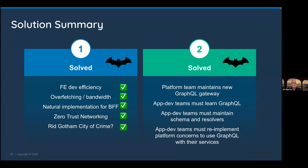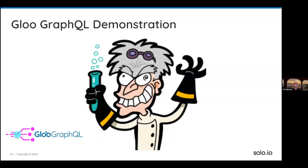In addition to resolving the initial concerns from the first part of this talk, we've now addressed new issues as well. Our platform team no longer has to maintain a separate GraphQL gateway. Our app dev teams don't necessarily have to learn GraphQL to the same extent, and they don't even have to maintain their own schemas and resolvers if that approach makes sense. And they no longer have to re-implement platform concerns using imperative code. That's enough talk about adopting a declarative approach to GraphQL — let's switch over and take a look at how that operates in action.